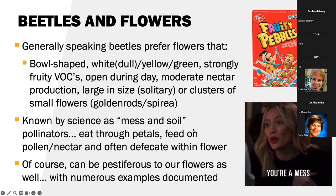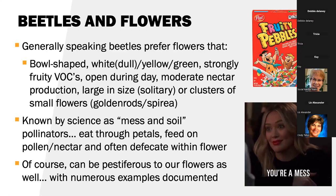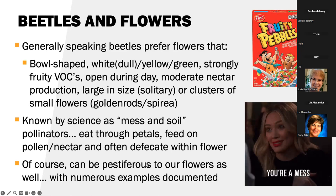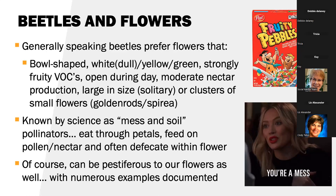Beetles are known by science as mess-and-soil pollinators. They are eating through the sepals, the petals, feeding on nectar or pollen, and they often defecate within the flower — kind of gross. And of course, there are beetles that can be pestiferous to our flowers, crops, and horticulture industry. Generally speaking, though, that's going to be the larval form of those beetles. A lot of these adults might be pests as larvae, but as adults they could be technically beneficial in our ecosystems.